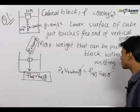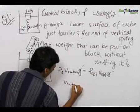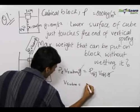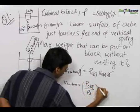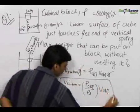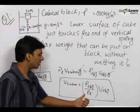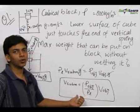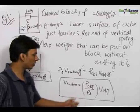The g cancels and we get V submerged is equal to rho object upon rho liquid into volume of the whole object. This is an important formula you should remember and this is the case whenever the object is floating in the liquid whether the liquid be in any situation this is always true.